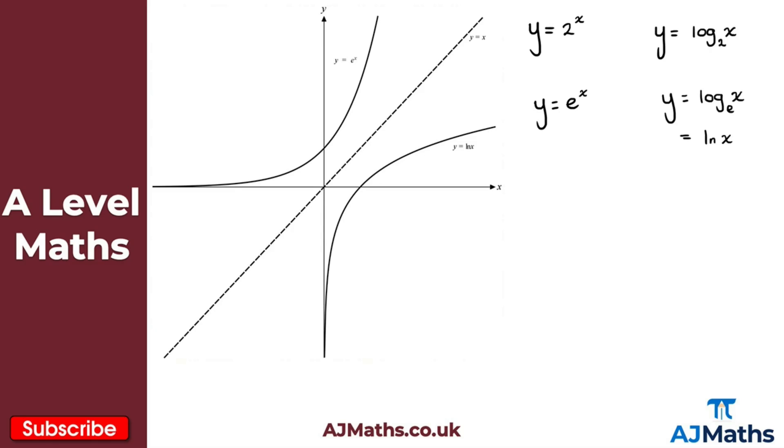Now, the graph of y equals the natural logarithm of x, ln of x, passes through one point here. That's this point here, which has coordinates one, zero. The curve doesn't actually intersect with the y-axis, and in fact, it's actually an asymptote. So the y-axis is an asymptote.